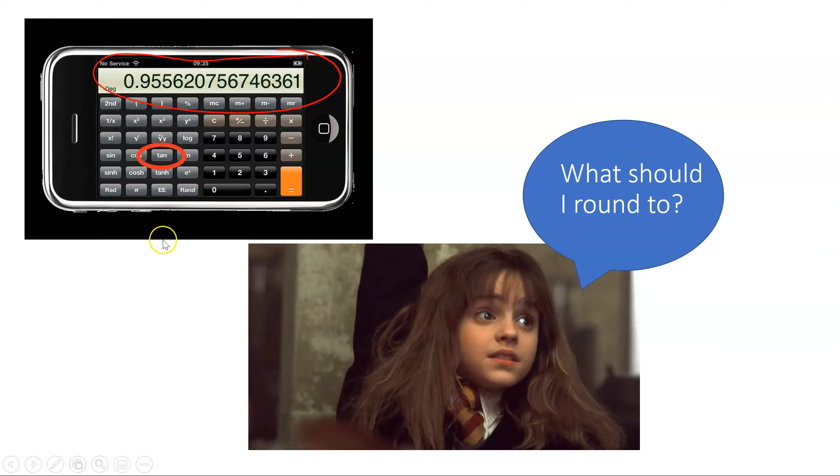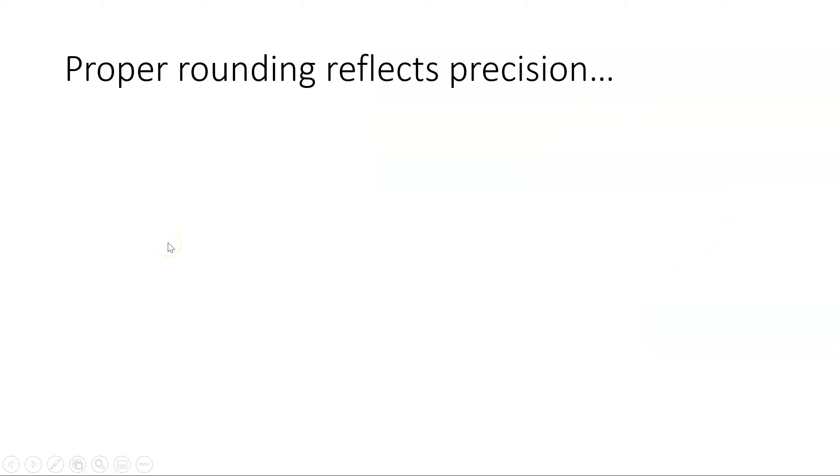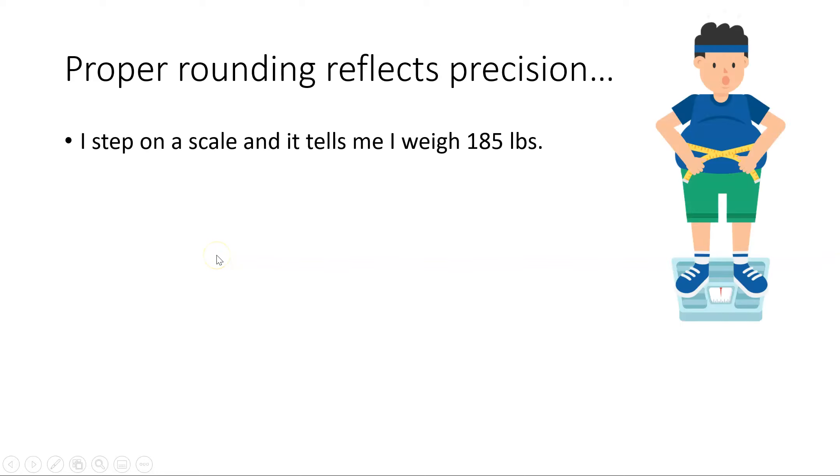Basically, the way we round numbers in science is based on the precision of the instruments that we're using. So I'm going to give you an example.